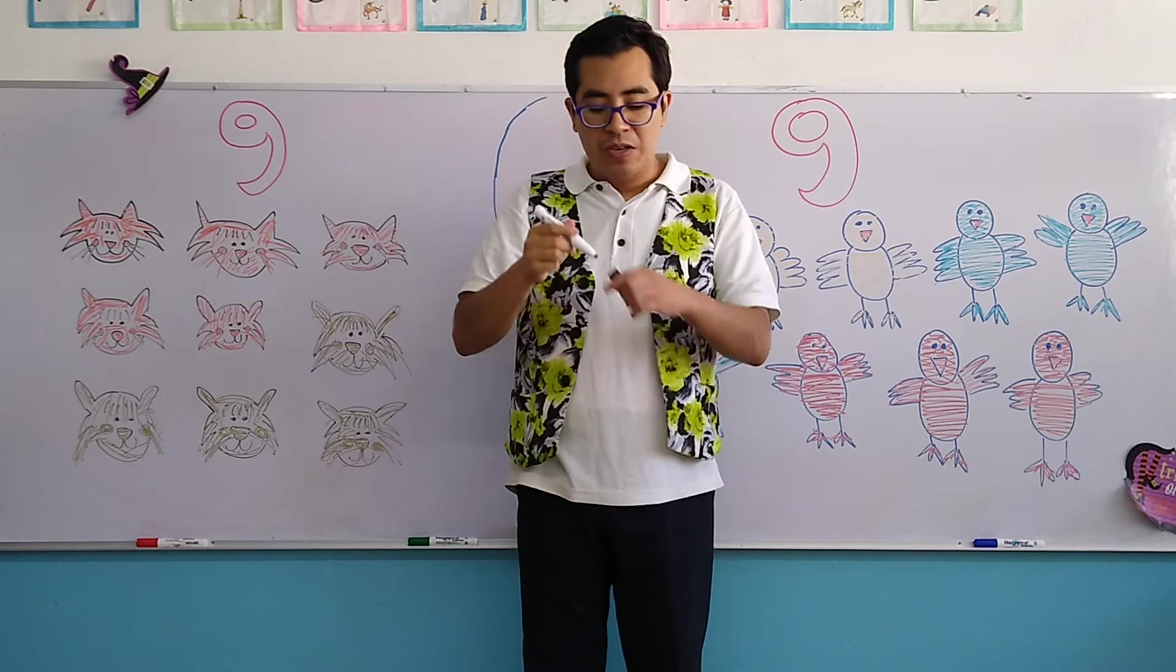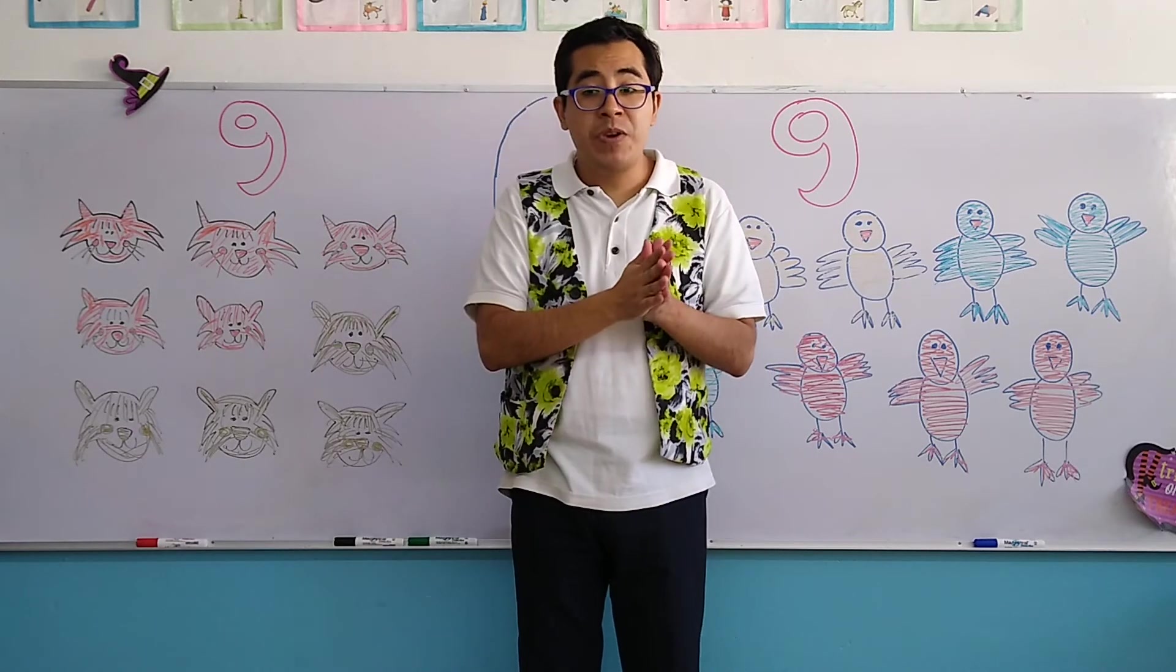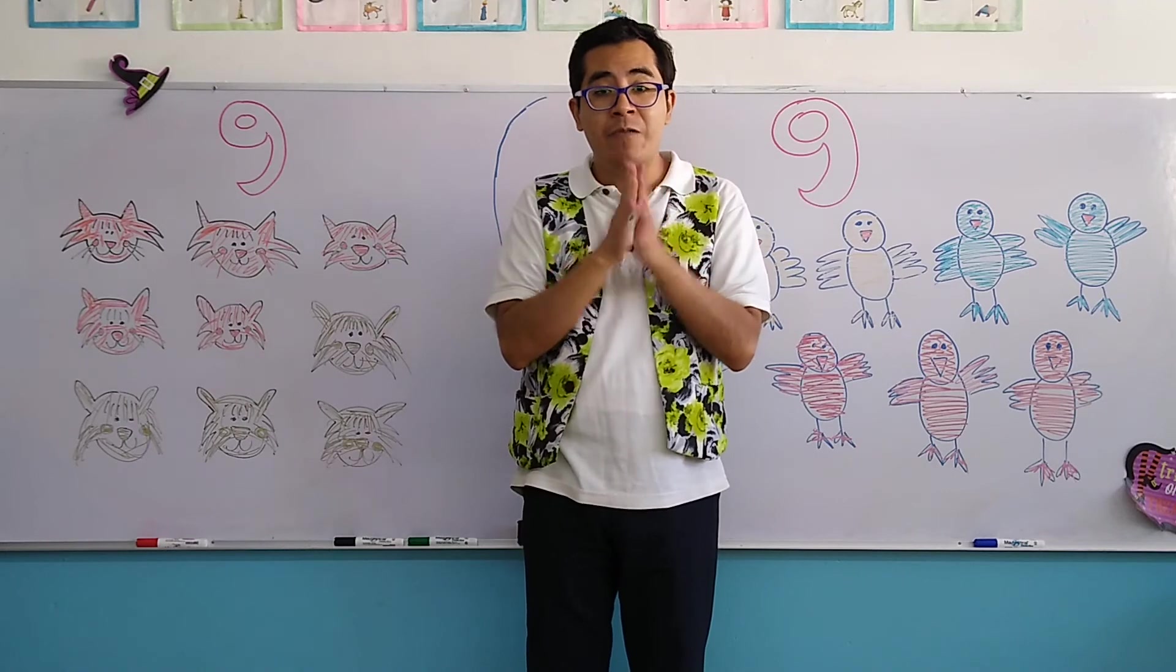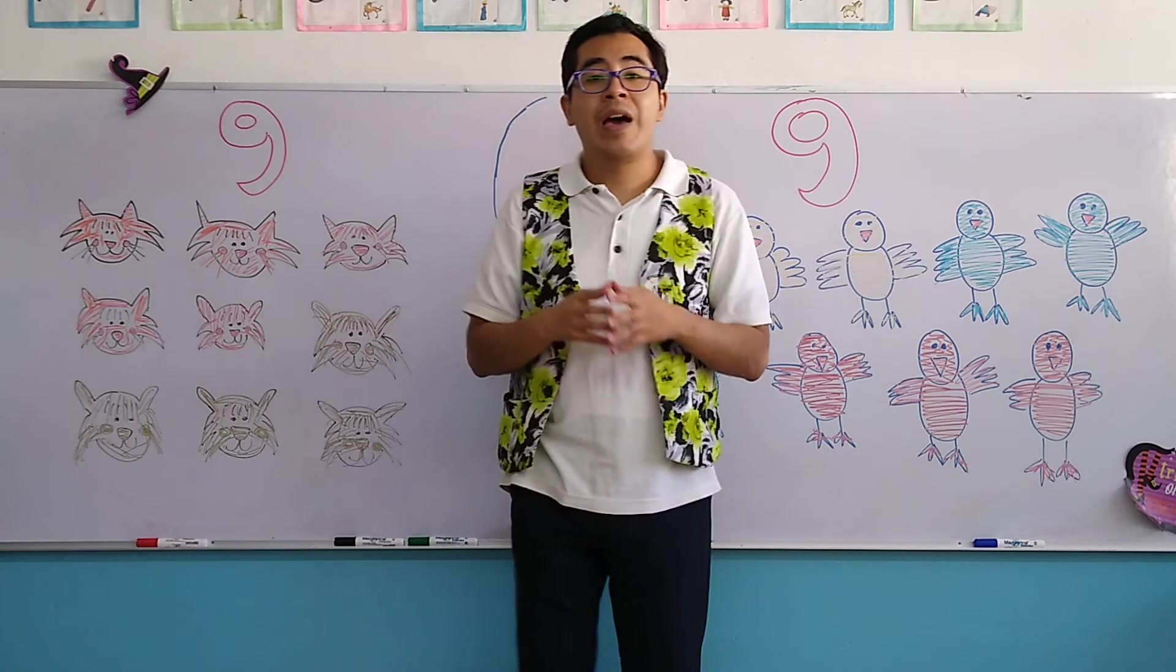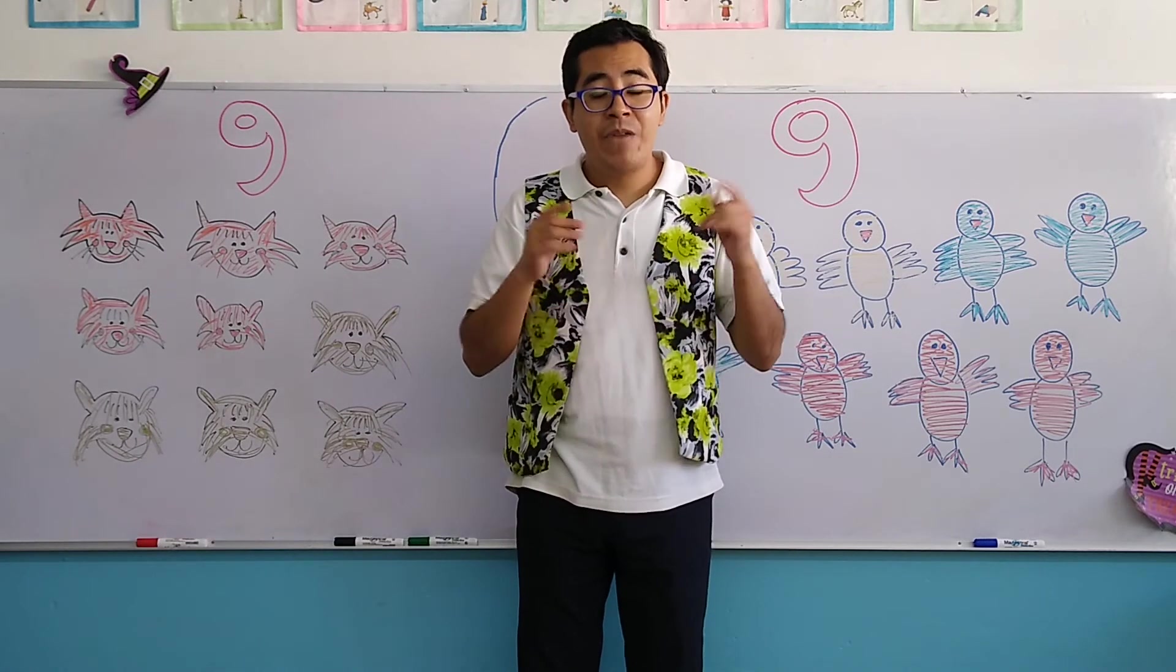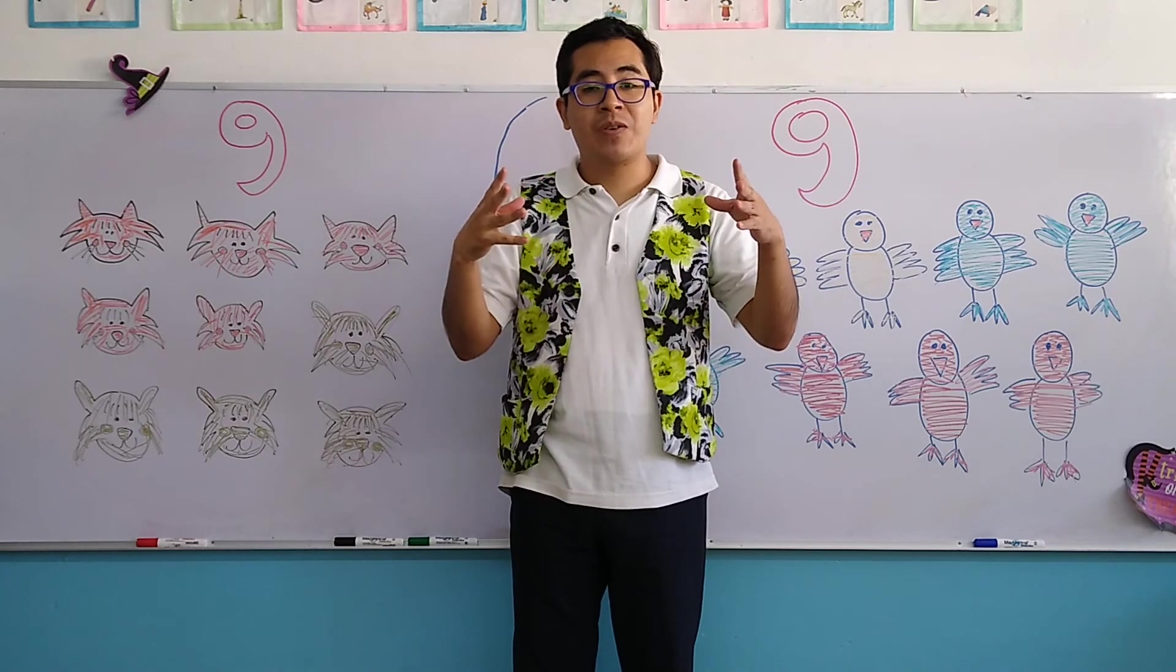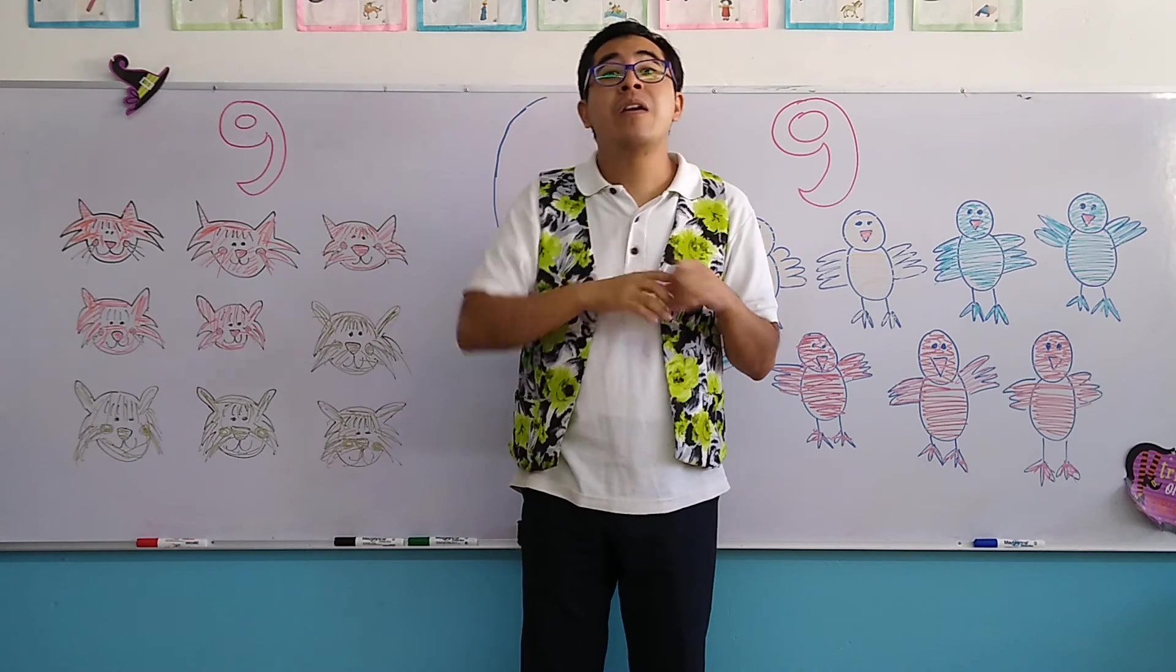So that's it for today, my children. Don't forget to review and do the activities correctly. Don't forget the name of the animals of this class, which are the cats and the birds. And don't forget the new number, which is number 9. Very good. So we'll see you tomorrow. Because we're going to continue with more activities, more objects. Don't forget that the teacher loves you very much. Take care. Goodbye.